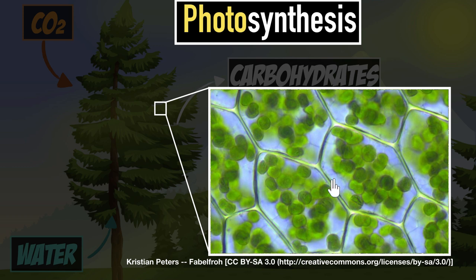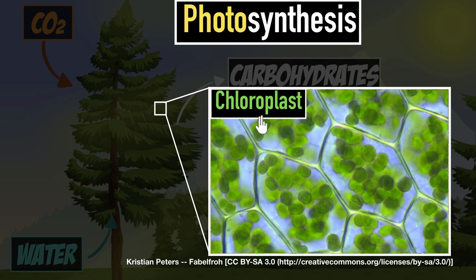These compartments that you are seeing are the cells of that leaf. And inside these cells, you can see all these green things. These green things are called chloroplasts. And photosynthesis happens inside these chloroplasts.